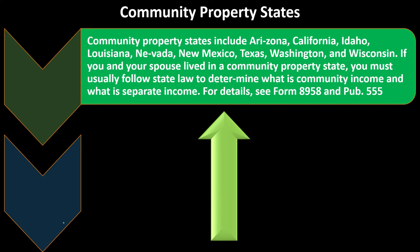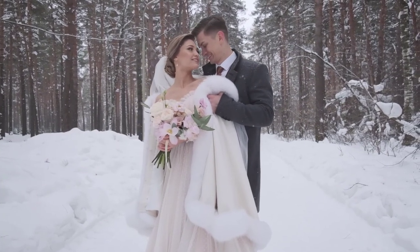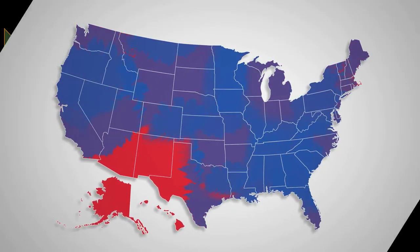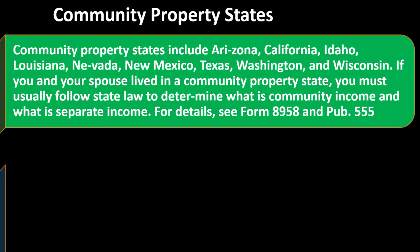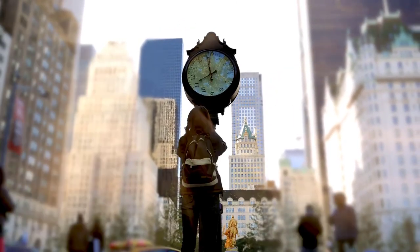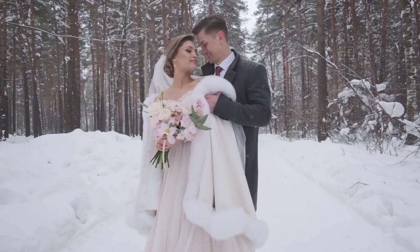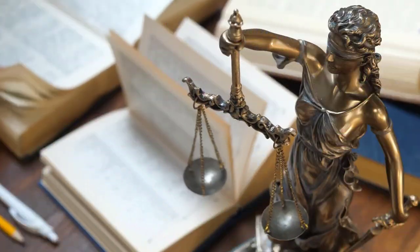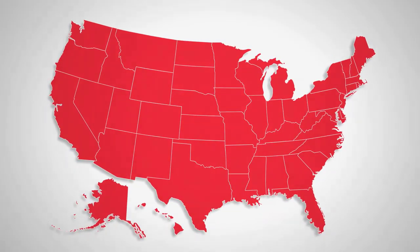Community property states are increasingly important, especially for married filing jointly or married filing separately filers. Community property states include Arizona, California, Idaho, Louisiana, Nevada, New Mexico, Texas, Washington, and Wisconsin. If you or your spouse lived in a community property state, you must follow state law to determine what is community income versus separate income. See Form 8958 and Publication 555 for details — this especially matters when considering a separate return.